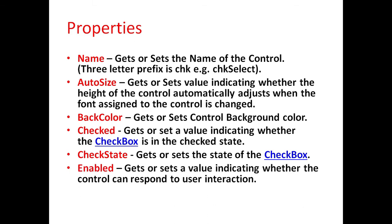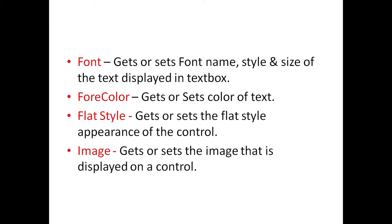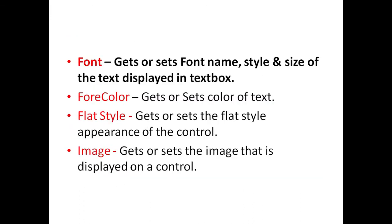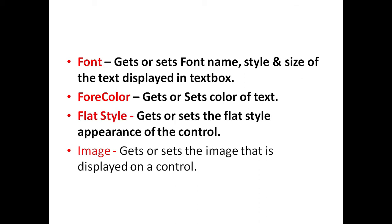Enable property is used to get or set a value indicating whether the control can respond to user interaction. The Font property is used to get or set the font name, style, and size of the text displayed in the textbox. ForeColor property is used to get or set the color of the text. FlatStyle property is used to get or set the flat style appearance of the control.